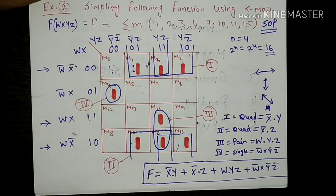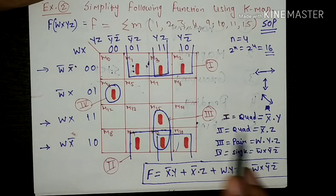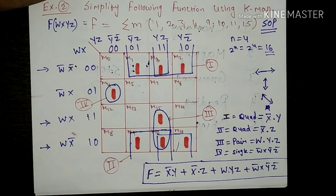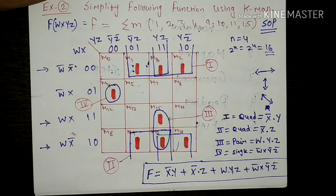So guys, in this way you can perform the minimization operation in the four variable function with the help of KMAP.